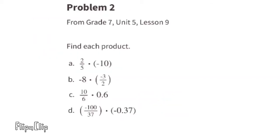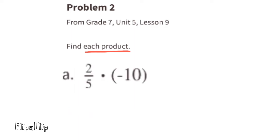Problem number two from seventh grade Unit 5, Lesson 9. Find each product. Part a: 2 fifths times negative 10. We can simplify: 5 goes into 5 once and 5 goes into negative 10 twice, so that becomes negative 2. Now we multiply straight across: 2 times negative 2 is negative 4, and 1 times 1 is 1.